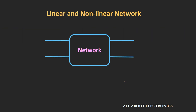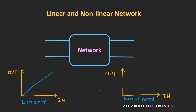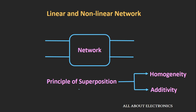The fourth kind of network is the linear and the nonlinear network. In a linear network, the relation between input and output is linear; in a nonlinear network, it is nonlinear. The linear network follows the principle of superposition, meaning it has two properties: homogeneity and additivity.